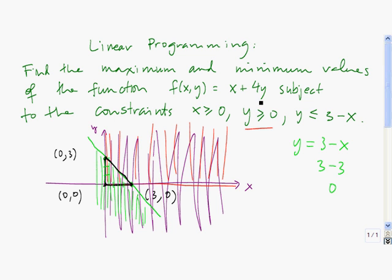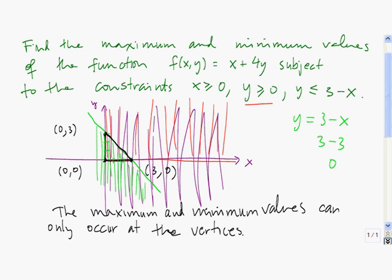Because the graph of this is a plane sitting in three dimensions, the maximum and minimum values have to occur at the vertices. So the last thing we have to do is take this function and evaluate it at each of the three vertices. Starting with the vertex at (0, 3): f(x, y) equals x plus 4y, so we have 0 plus 4 times 3, and that's equal to 12.